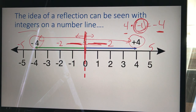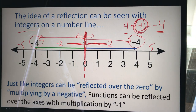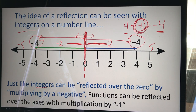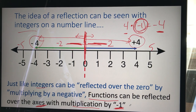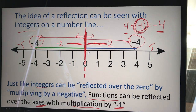Just like integers can be reflected over the zero by multiplying by negative one, the same thing can happen with functions. Functions can be reflected over the x-axis or y-axis using the same idea — multiplication by negative one. It's the same process, the exact same mechanics. We're not going to use a zero line with functions; we're going to use either the y-axis or the x-axis.